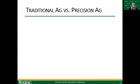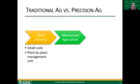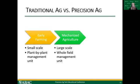Think about traditional ag versus Precision Ag. In early farming before mechanized agriculture, farms were very small scale, allowing plant-by-plant management — you could go out, look at all your plants individually, and apply exactly what they needed. Once we moved to mechanized agriculture, we could cover a lot more ground, but what we lost was that plant-by-plant management. Now we're looking at whole-field management units and missing some of the intricacies that come with variability in our fields.